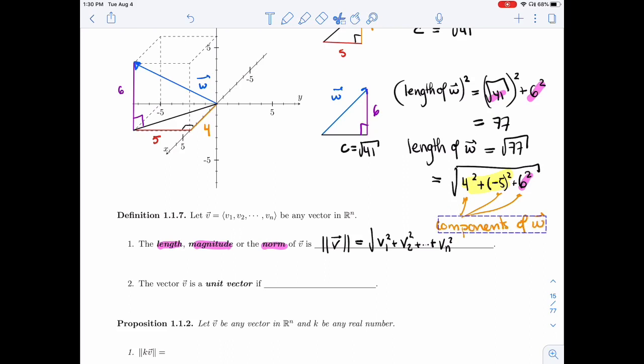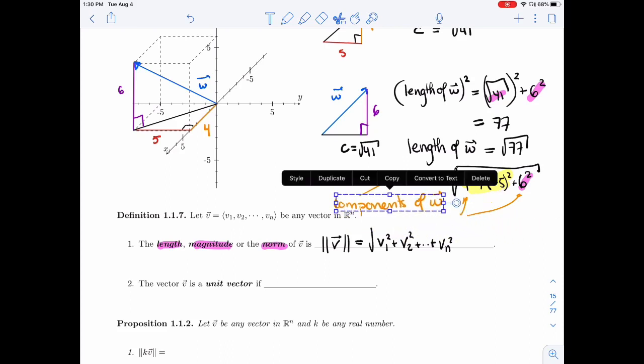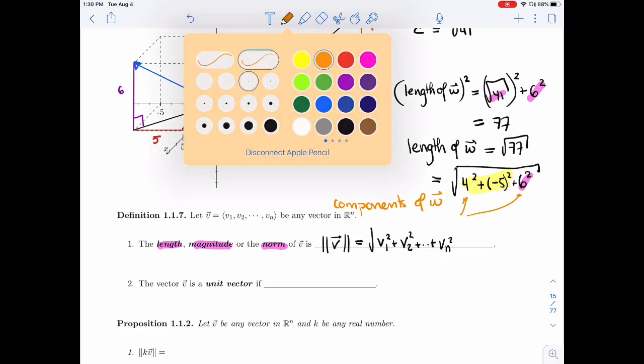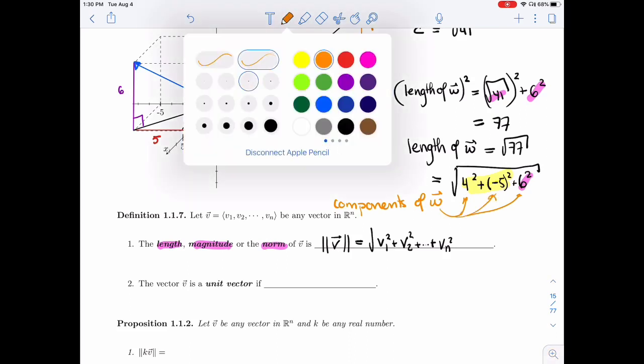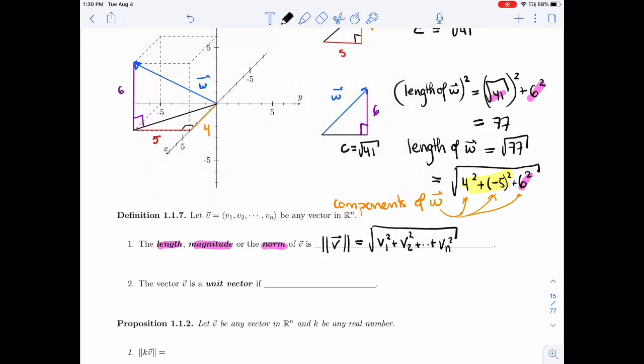It's going to be square root of the sum of the components squared. Just to make sure you can see this nicely. There we go.